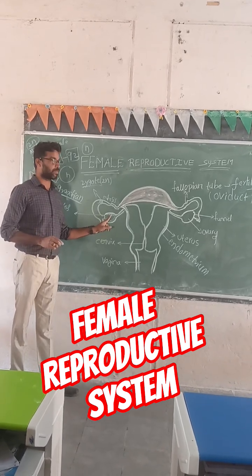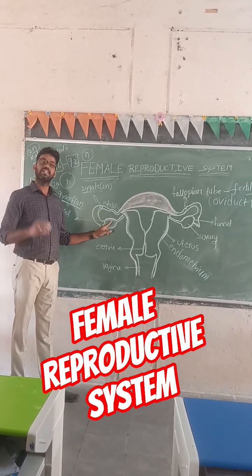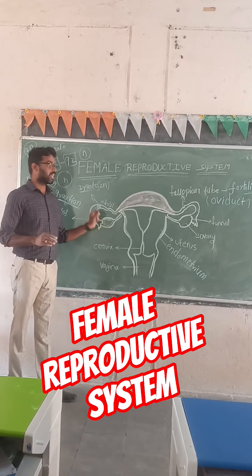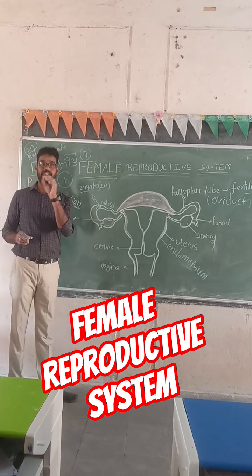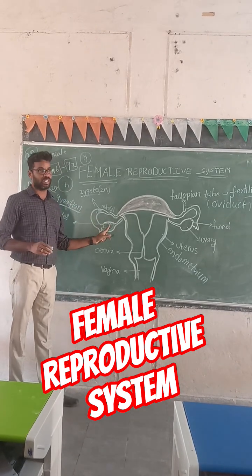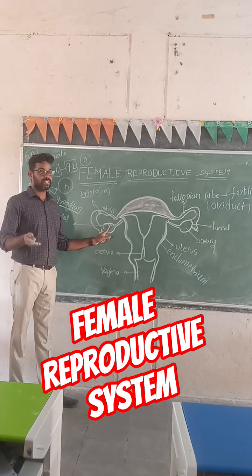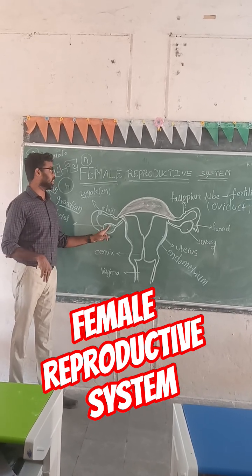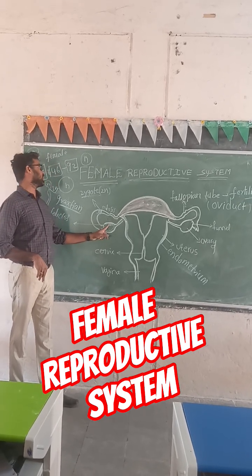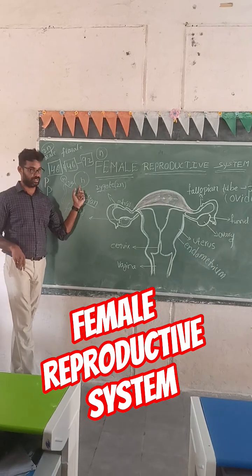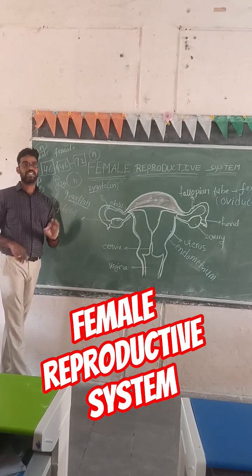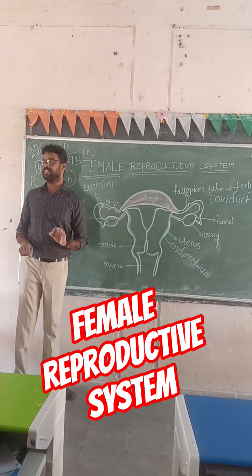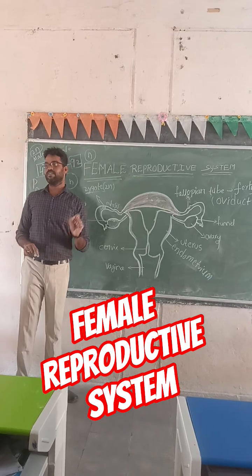Whenever these follicles are developed, fluid enters into the follicles. Inside, you can see meiotic cells. With the help of meiosis only, it creates haploid ova. Haploid means a single set of chromosomes.